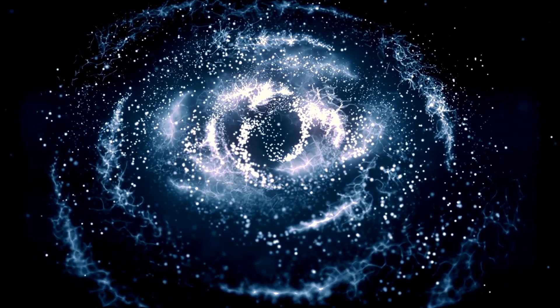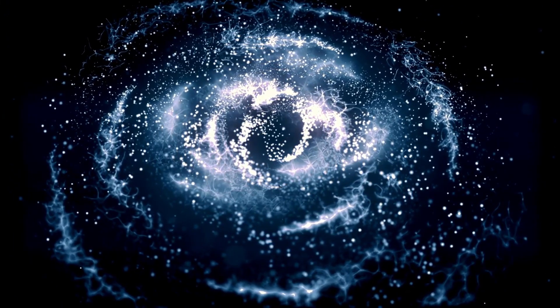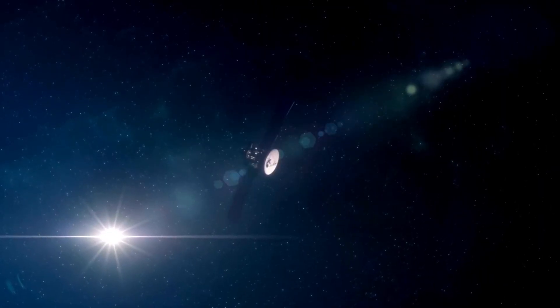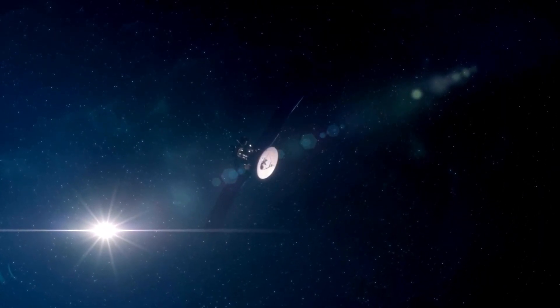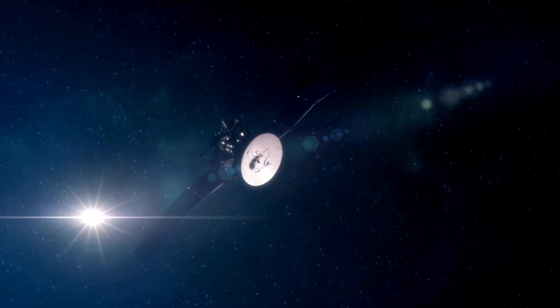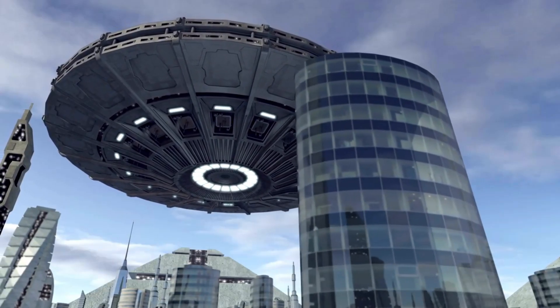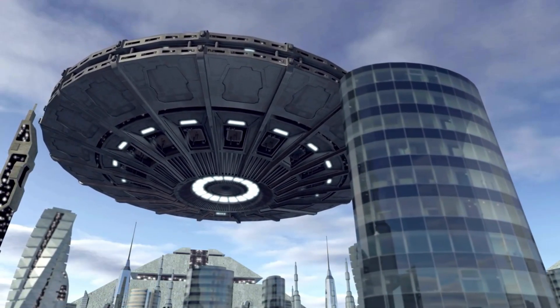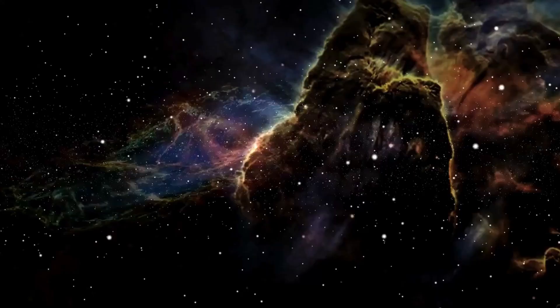Scientists estimate the width of our observable bubble to be around 93 billion light-years. A light-year measures the distance that light, the fastest thing in the universe, travels in one year: around 5.88 trillion miles or 9.46 trillion kilometers. So when we discuss the breadth of the observable universe being 93 billion light-years, we're talking about an amazing expanse.